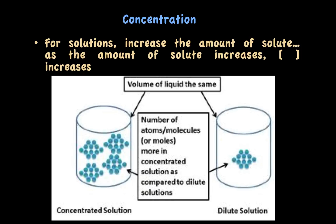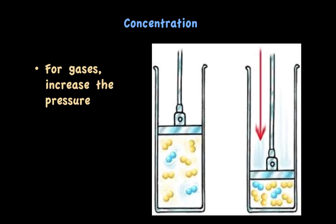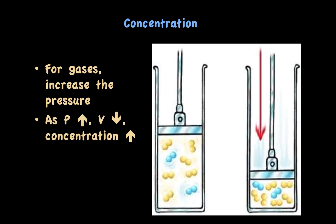What about for gases? To increase the concentration of a gas, all you have to do is increase the pressure. By increasing the pressure, you decrease the volume, forcing the same number of moles of particles into a smaller volume. As volume decreases, the concentration increases and the number of collisions increases.